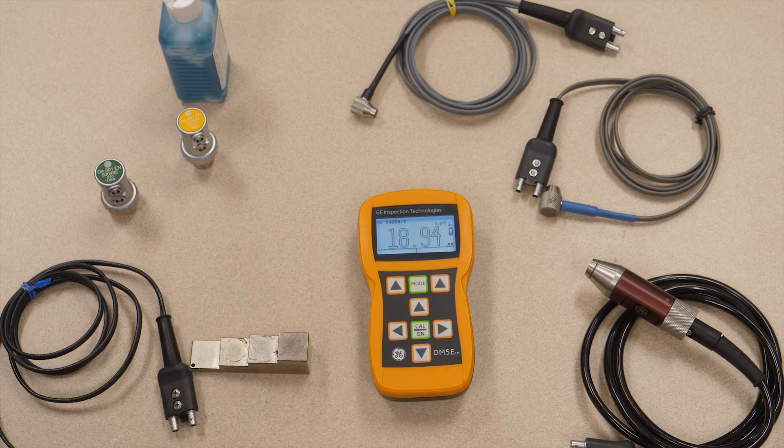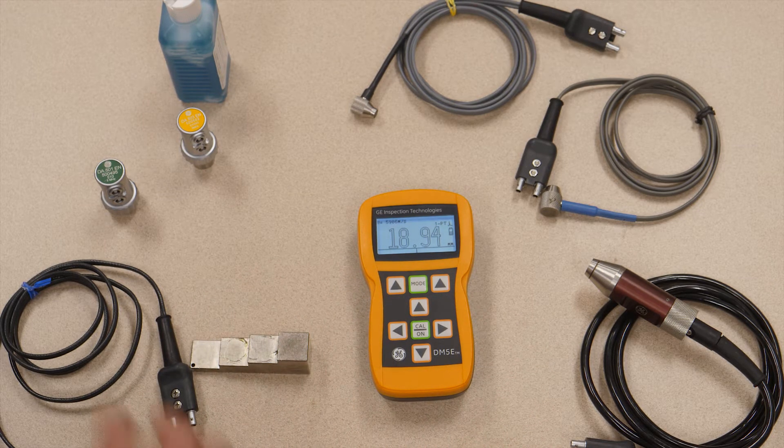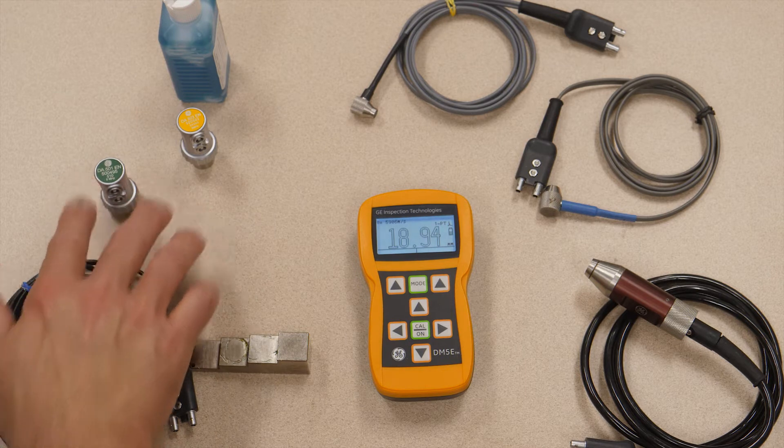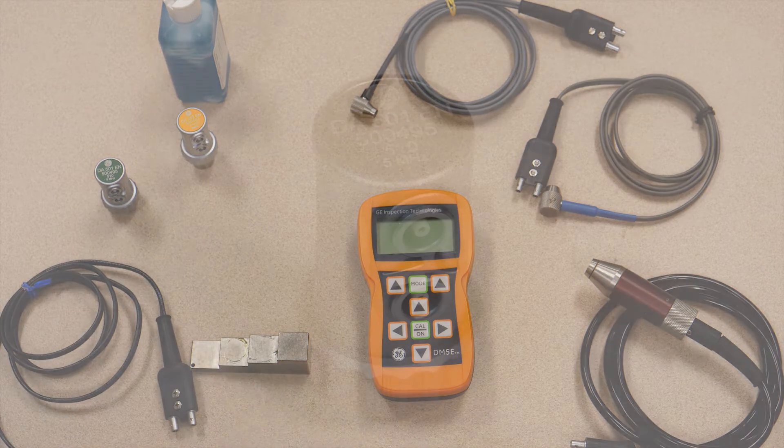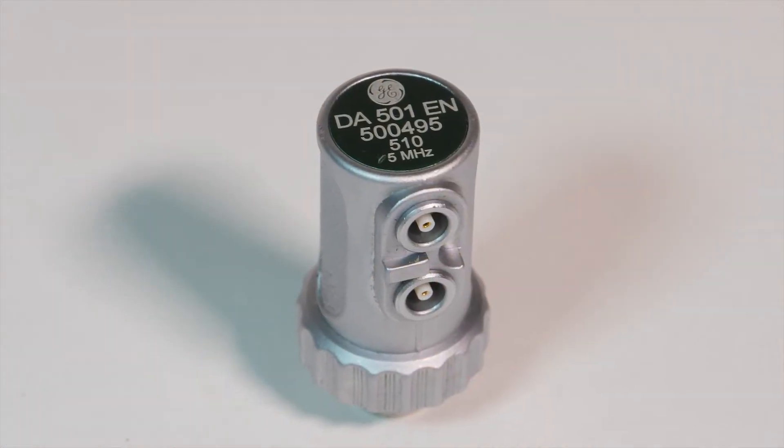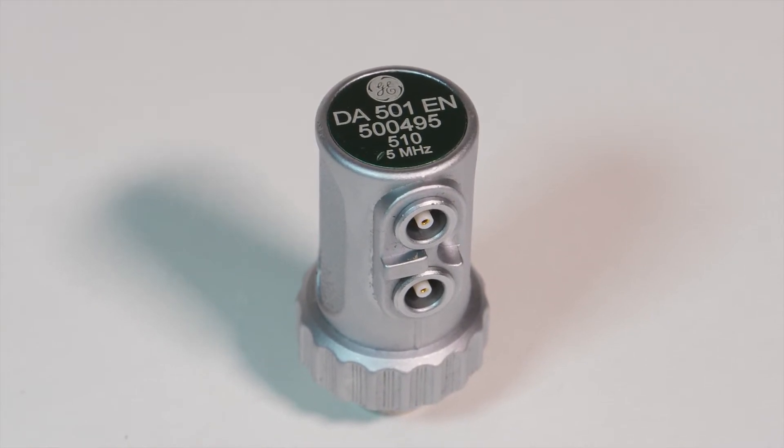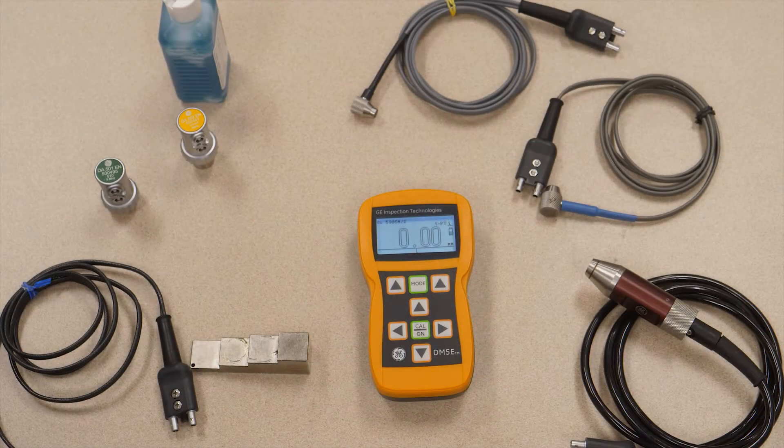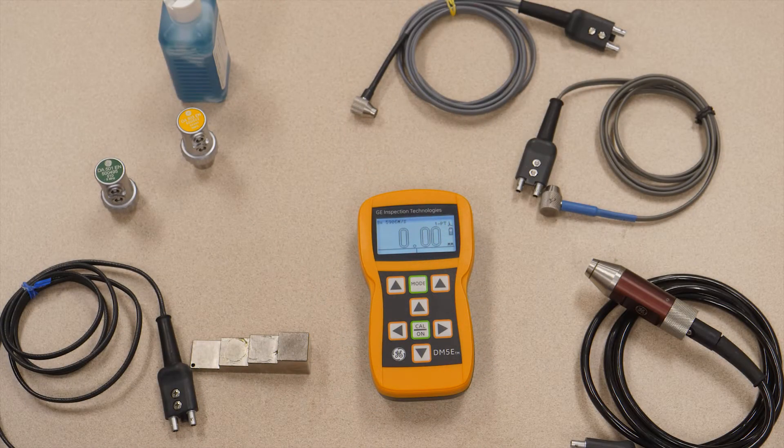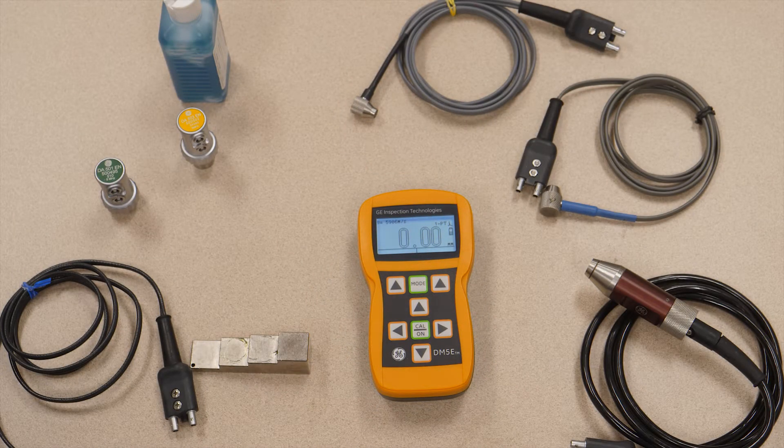Shown with the instrument here are some of the most common probes. The DA501 is probably the most commonly used probe with the DM5E. It is a five megahertz general purpose probe with a measurement range of about one millimeter to two hundred millimeters, forty thousandths of an inch to eight inches.